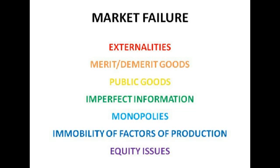Imperfect information helps contribute to the overconsumption or underconsumption of merit or demerit goods because people aren't fully aware of the benefits or costs of what they're consuming. Education tends to be underconsumed because people don't realise how important it is, and cigarettes tend to be overconsumed because people aren't fully aware of the health risks — or they think it's not going to be them, despite the warnings on cigarette packets.